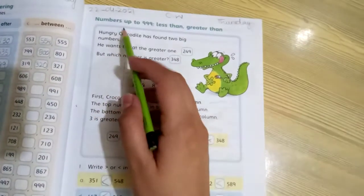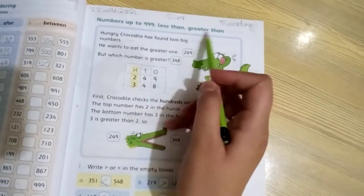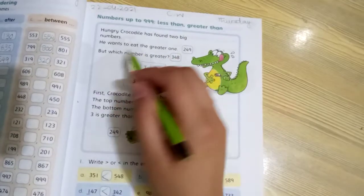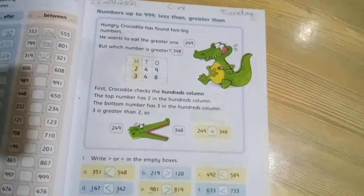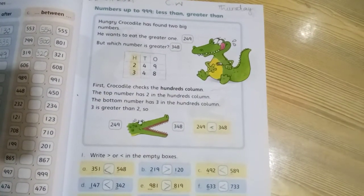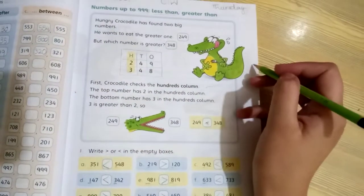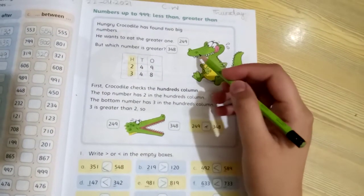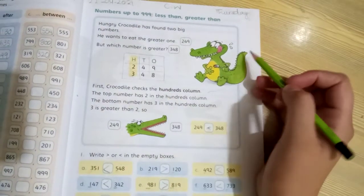This is very easy work. Come to the next page. Numbers up to 999, less than or greater than. Hungry crocodile has found two big numbers. He wants to eat the greater one. But which number is greater? This is the hungry crocodile.